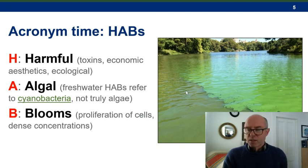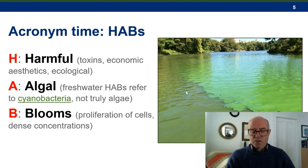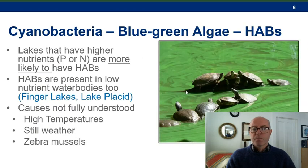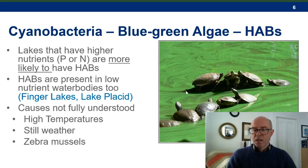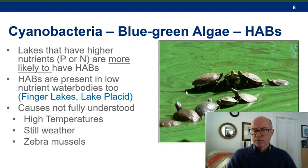Specifically, cyanobacteria are not true algae, and they become a bloom when there is a proliferation of cells to very high concentrations — a threshold not well agreed upon across the US and the world, but you'll know it when you see it. These blooms occur in lakes with high nutrients such as phosphorus and nitrogen, but they also seem to occur in low-nutrient lakes like the Finger Lakes in central New York and Lake Placid.